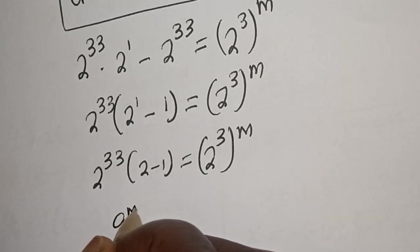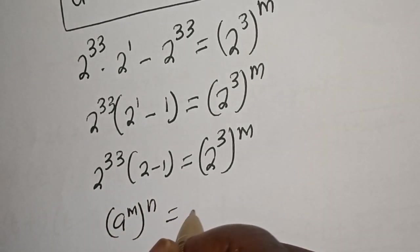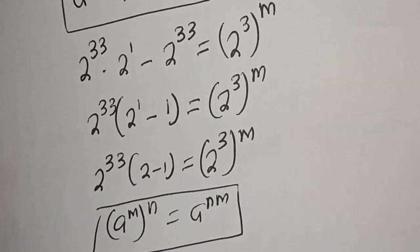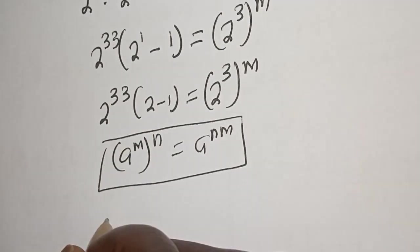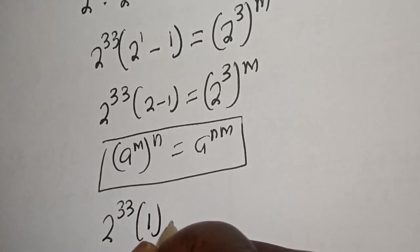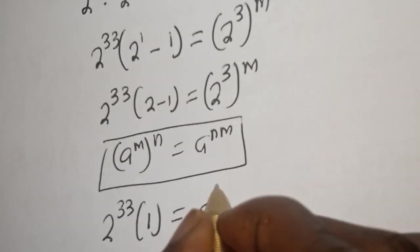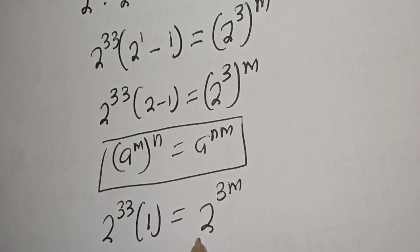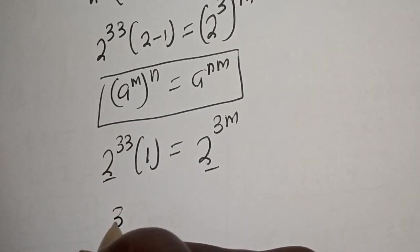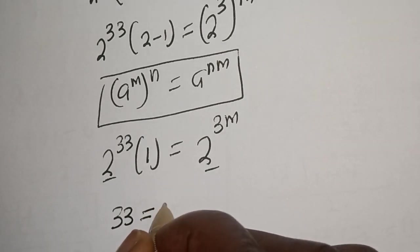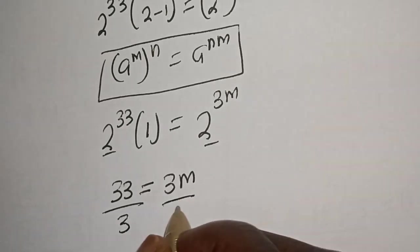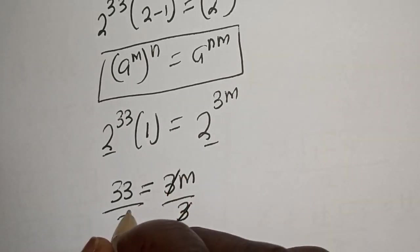Now using the rule: a raised to power m to the power of n is equal to a raised to power n times m. This can be written as 2 raised to power 33, bracket 2 minus 1, is equal to 2 raised to power 3 times m. They have the same base 2, so we work with the exponents: 33 is equal to 3m. Dividing both sides by 3, we get m is equal to 11.